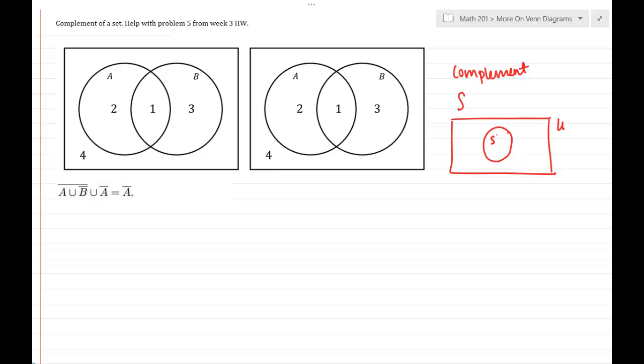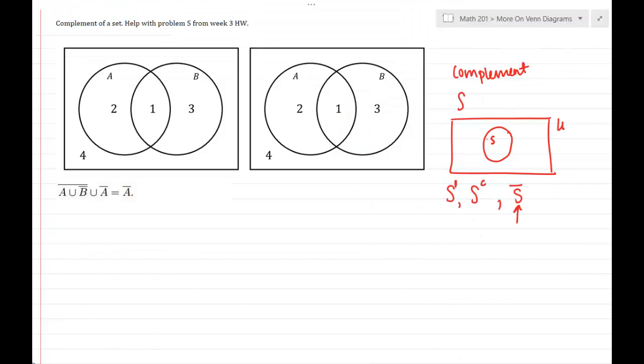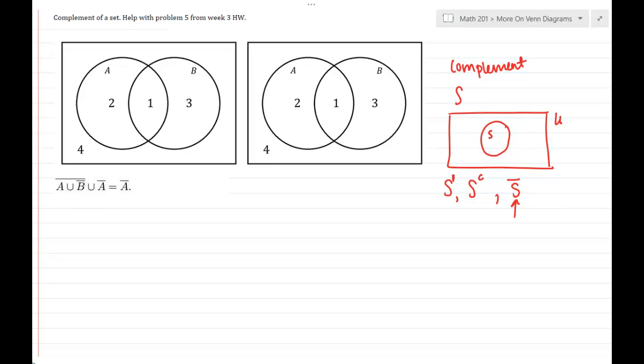So if I'm trying to think about S complement, now S complement you'll see denoted several different ways. You might see it as S bar, S with a bar on top, S apostrophe or S dash, or S with a C on it. So you might see the complement of a set denoted in all these different ways.